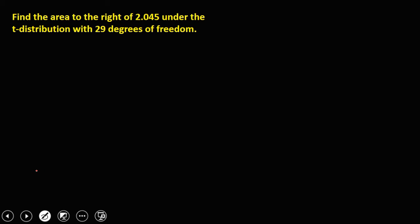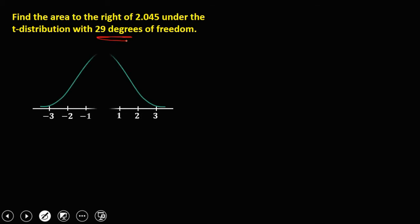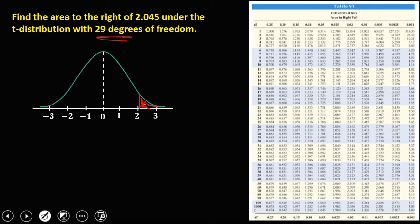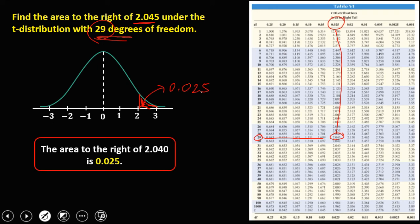Find the area to the right of 2.045 under the t-distribution with 29 degrees of freedom. On the curve, 2.045 is the t-value. Using the t-distribution table with degrees of freedom 29, we look for 2.045. Therefore, the area to the right of 2.045 is 0.025.